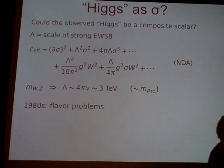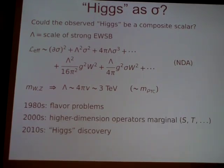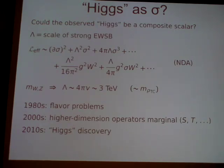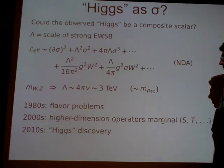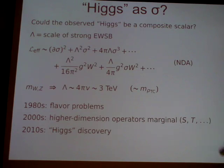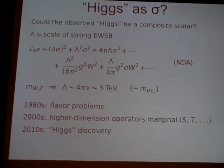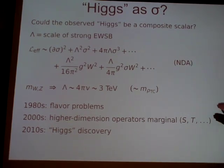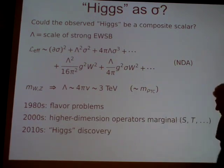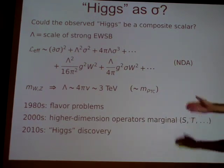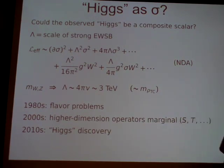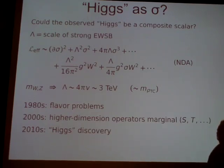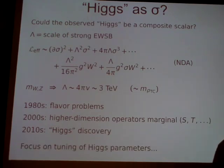This paradigm has lots of problems. In the 80s, it was shown to have various flavor problems in the UV completion. In the 2000s, precision electroweak measurements were found to be very marginal in this theory. And in the 2010s, we have a Higgs discovery. So it seems like this theory should be completely down and out.